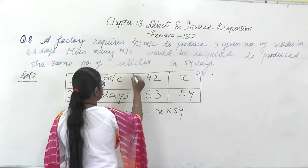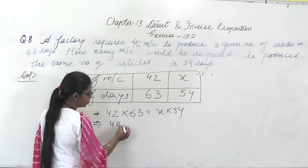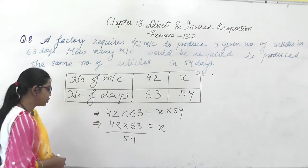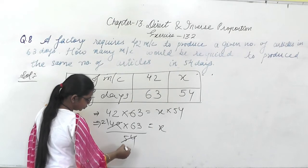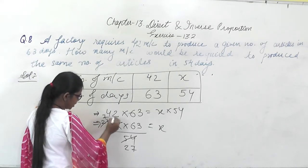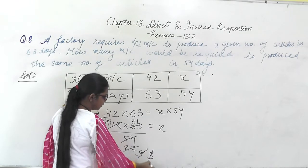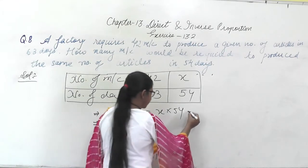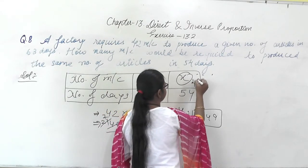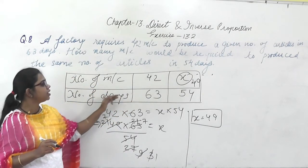Now multiply: 42 × 63 = x × 54. Bringing 54 to the other side gives x = (42 × 63) ÷ 54. Cancelling: dividing by 2 gives 21, dividing by 3 gives 7, dividing by 9 gives 7. So 7 × 7 = 49. The value of x is 49. So the number of machines required is 49. Since the number of days decreased from 63 to 54, the number of machines increased from 42 to 49.